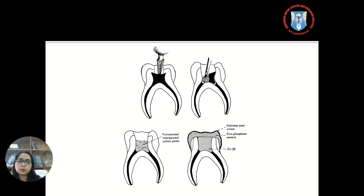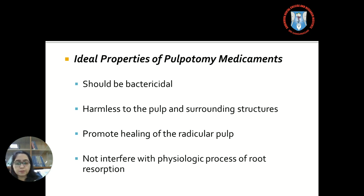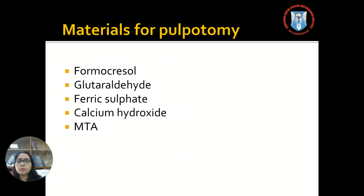This picture shows the procedure of pulpotomy: the first figure shows the access opening, the second shows the removal of the coronal pulp, the third shows the cotton pellet application saturated with formocresol, and the fourth shows the post-endodontic restoration. The ideal requirements of a pulpotomy agent are: it should be bactericidal, harmless to the pulp and surrounding tissues, should promote healing of the radicular pulp, and should not interfere with the physiological process of root resorption. The commonly employed materials are formocresol, glutaraldehyde, ferric sulfate, calcium hydroxide, and MTA.